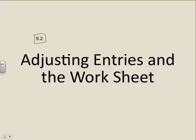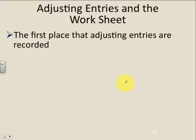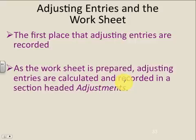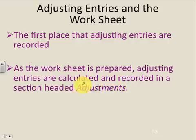We've done the worksheet in Chapter 8, so you are pretty prepared for this. The first place that adjusting entries are recorded is on the worksheet, not necessarily on the journal paper as we were discussing in 9.1. As the worksheet is prepared, adjusting entries are calculated and recorded in the section called Adjustments.